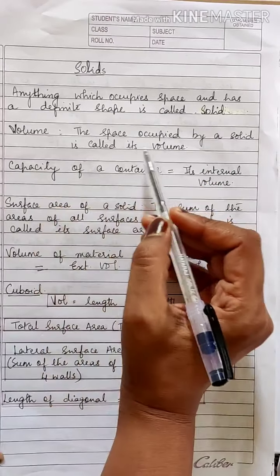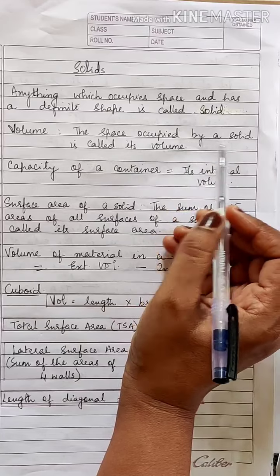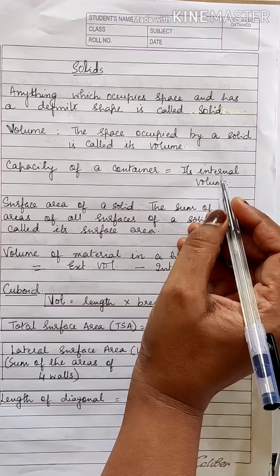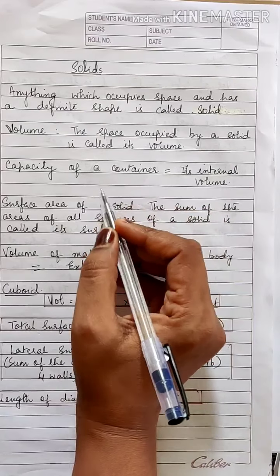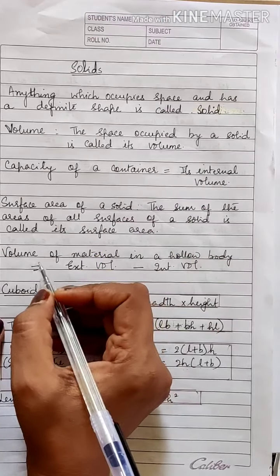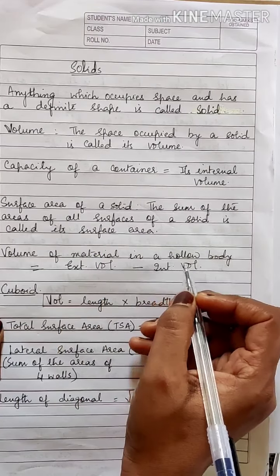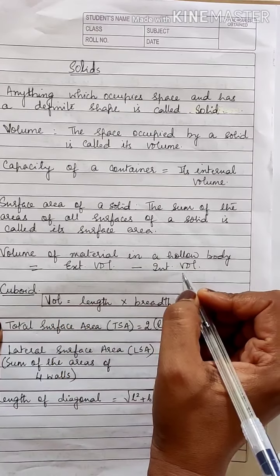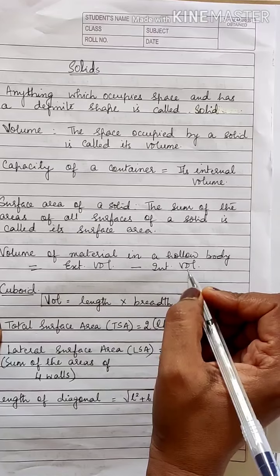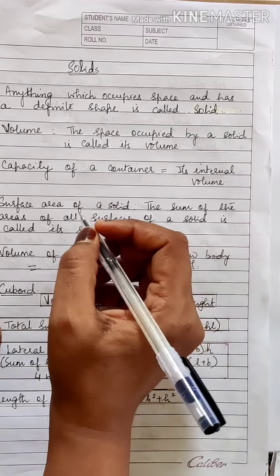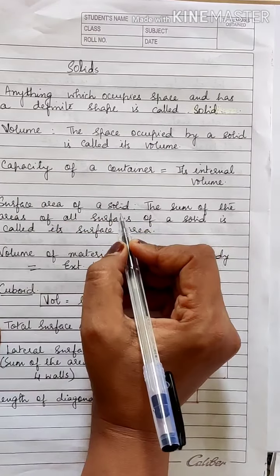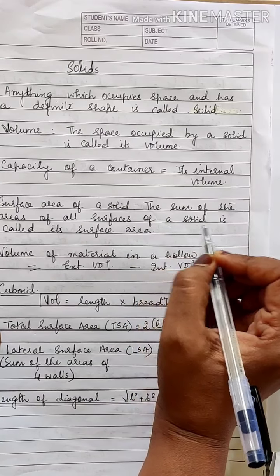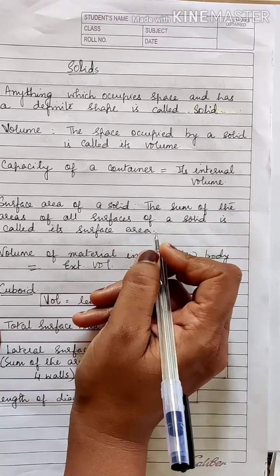Volume of a solid: the space occupied by a solid is called its volume, and the internal volume is called the capacity of the container. Volume of material in a hollow body is given by exterior volume minus interior volume. Interior volume is the capacity. The surface area of a solid: the sum of the areas of all surfaces of a solid is called its surface area.